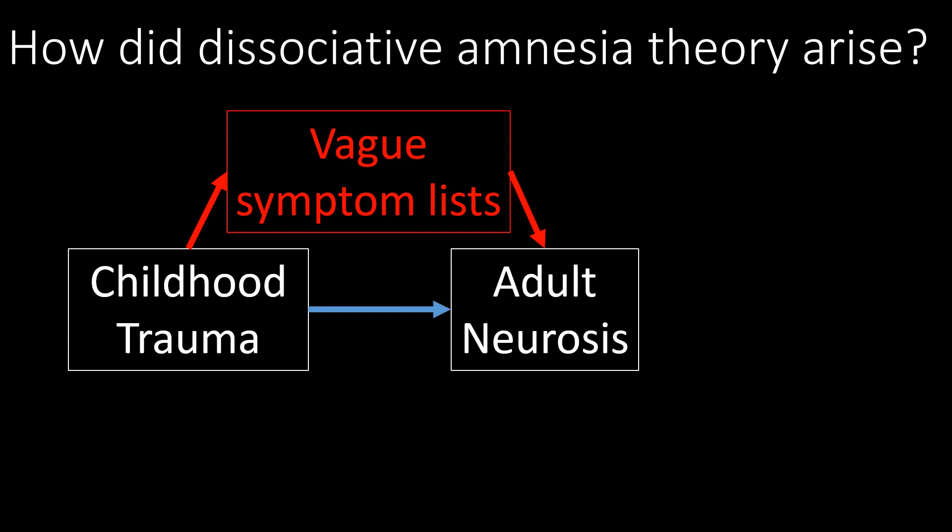In other words, if somebody does have trauma but feels they have no adult neurosis, they will still nevertheless find themselves in vague symptom lists — such as those listed in the book *The Courage to Heal*. This preserves the theory quite strongly. Without this addition there would be exceptions — people who were traumatized but had no adult neurosis. Adding this vagueness of symptoms blocks that disconfirming evidence.